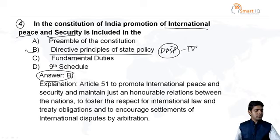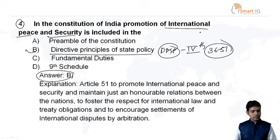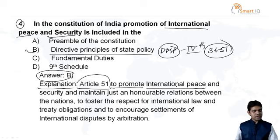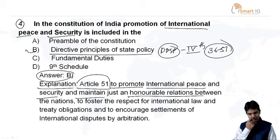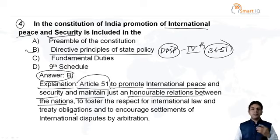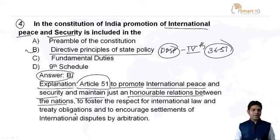Article 51 talks about promoting international peace and security and maintaining just and honorable relationships between nations — such as relations between India and Pakistan, India and Nepal, India and Bhutan, India and Bangladesh, and India and China — promoting international peace and security between countries.